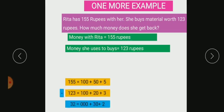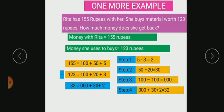Now, you should write again the numbers in expanded form. 155, you should write 100 plus 50 plus 5. Then 123, 100 plus 20 plus 3.